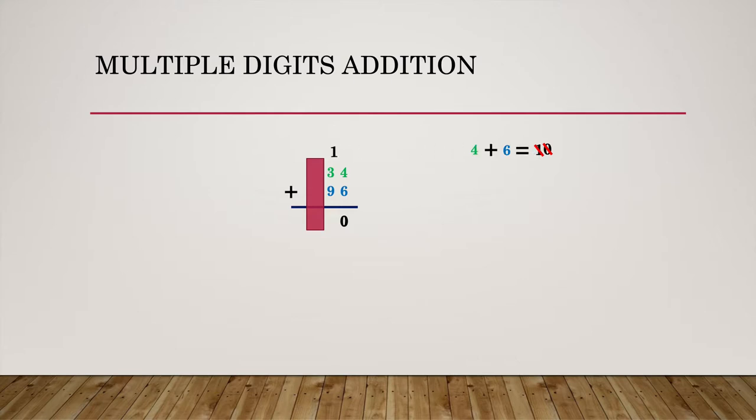And then we add them up. 9, 10, 11, 12, 13. That's 13. Then we cross out the 3 just as before, we put it below here, and now we take the 1 and then we put it right there, because we don't have any more numbers to add. Very good. So that is 130. Very good.